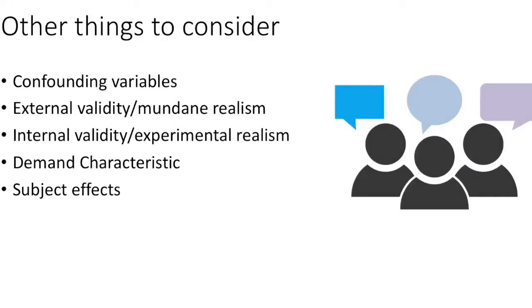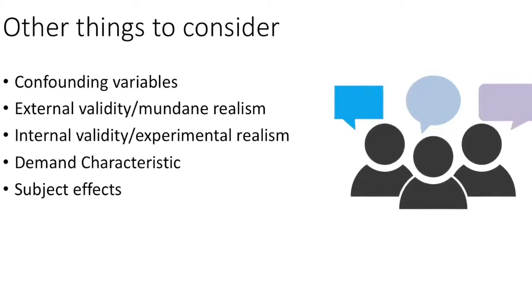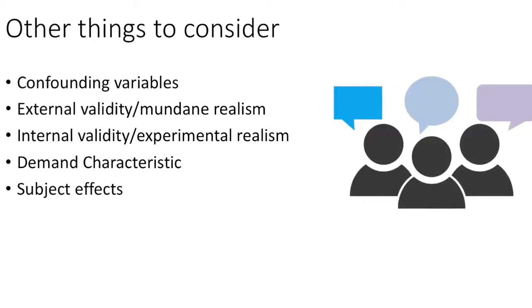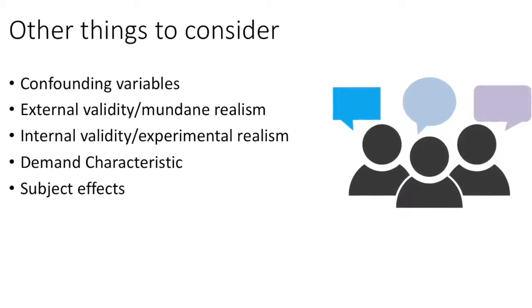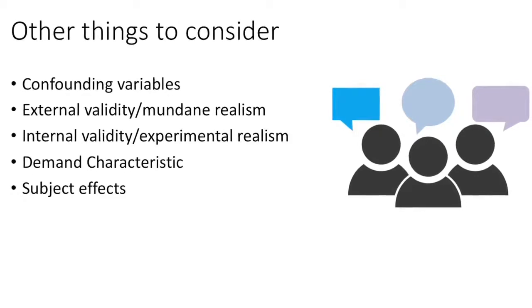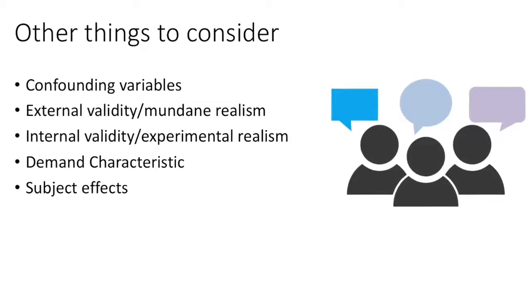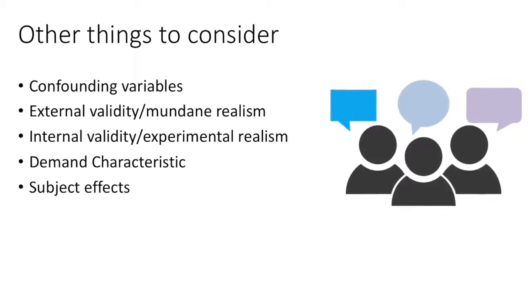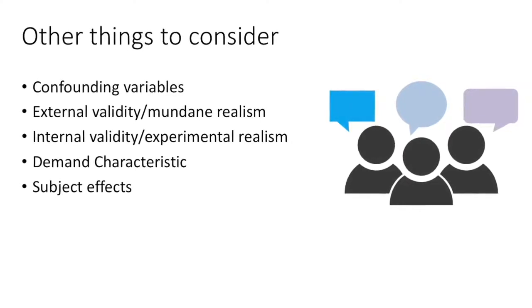Things to consider in social psychology experiments include confounding variables whereby there are two or more independent variables that co-vary, making it impossible to find the cause. We also have to consider external validity or mundane realism, which is defined as the experiment's similarity to real world circumstances, how you can use laboratory research to generalize to the real world situation.